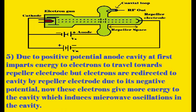Due to the negative terminal of the repeller, electrons can never reach it — they are reflected back to the cavity. Since the anode cavity is at positive potential, it accelerates the electrons, giving them energy to travel towards the repeller. The repeller reflects them back due to its negative potential. These high-energy electrons, when reaching the cavity for the second time, induce oscillations in the cavity.